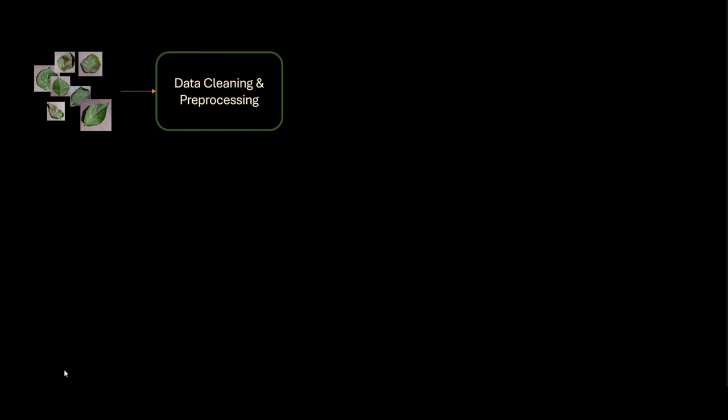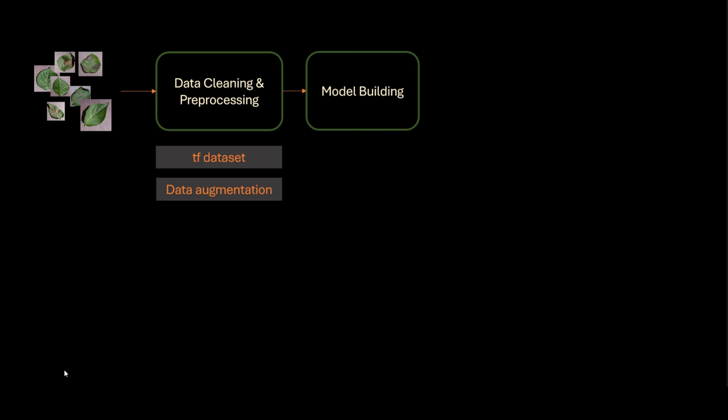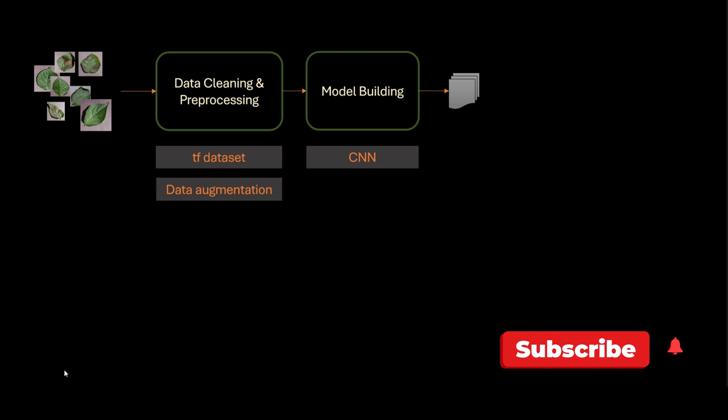Then comes data cleaning and preprocessing step, for which we will be using TF Dataset and data augmentation. Data augmentation because we might not have enough diverse set of images, so we need to rotate and flip and adjust contrast to create more training samples. Once we have that, we'll use model building using Convolutional Neural Network. CNN is a standard way of doing image classification as of 2021, and therefore we'll be using CNN and then export the trained model.